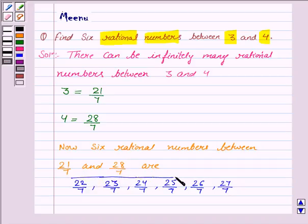So, these are 6 rational numbers between 3 and 4, which is the answer and this completes the question. Bye for now. Take care. Hope you enjoyed the session.